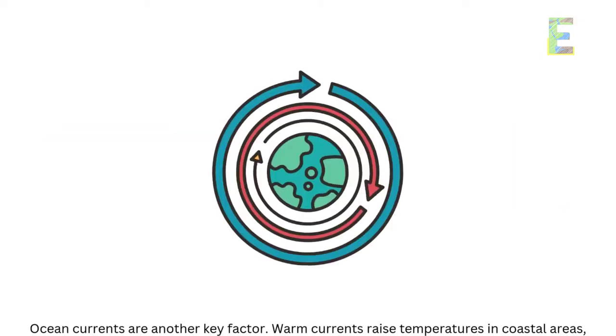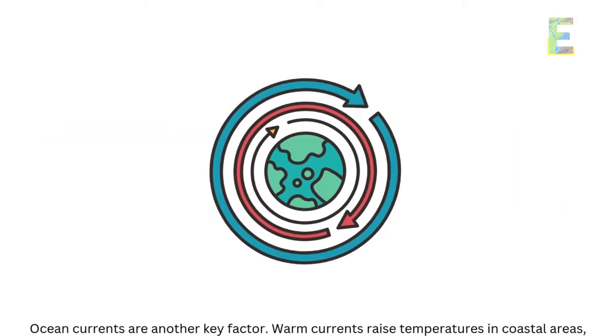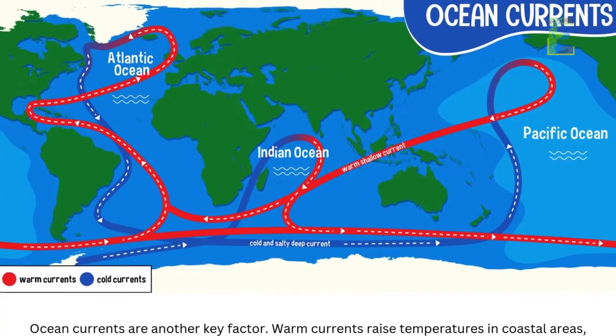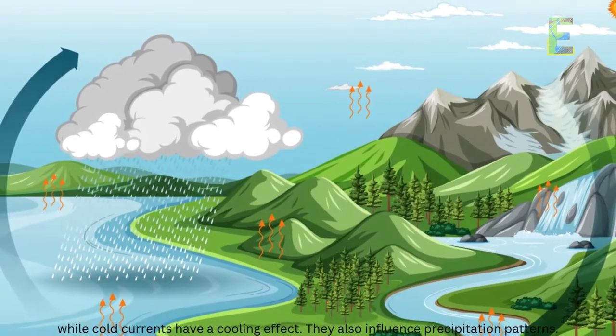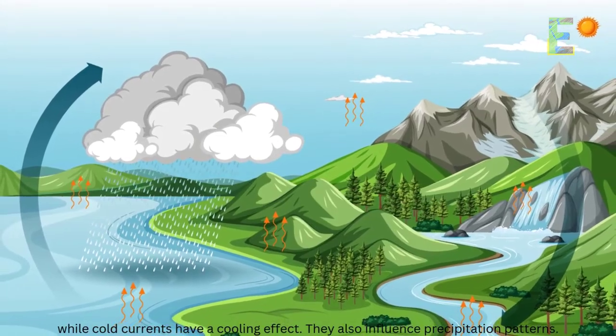Ocean currents are another key factor. Warm currents raise temperatures in coastal areas, while cold currents have a cooling effect. They also influence precipitation patterns.